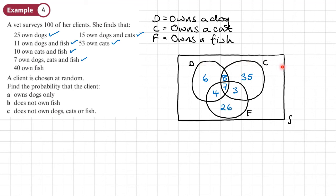The sample space needs to add up to 100 clients. Some clients may not own any of these pets. We add all the numbers already placed — that makes 89 — so there are 11 clients unaccounted for, and we fill in 11 in the region outside all three circles but inside the sample space.